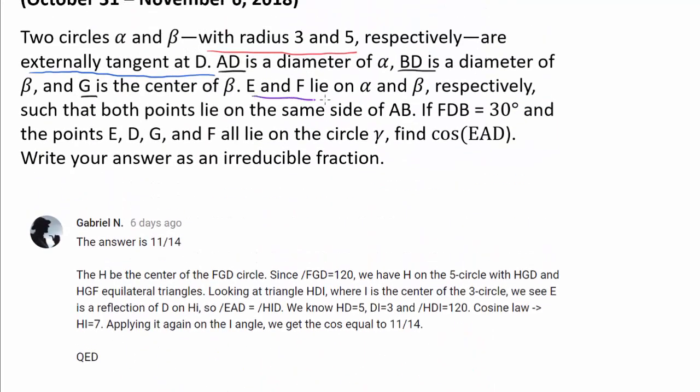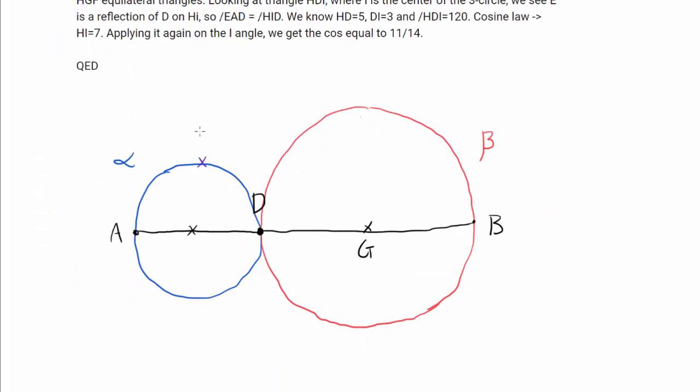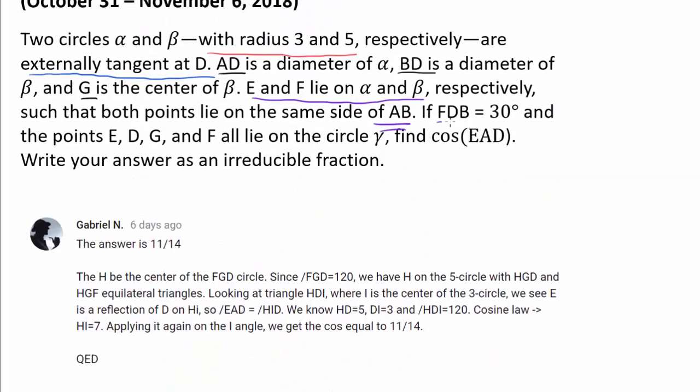E and F lie on alpha and beta respectively such that both points lie on the same side of AB. So we can possibly have E on the side, F on the side, but we cannot have E on the side and F on the side because they will be on opposite sides of AB. We are not sure where E and F go for now, keeping in mind that E and F are on the same side of AB.